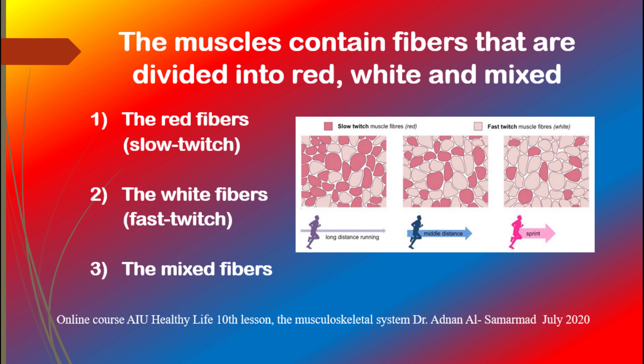The white fibers are suitable for athletes who should perform short and strong performances. The mixed fibers, also called fast twitch A, occur in 80% of people and have a mixture of endurance and strength activities, and are suitable for medium distance races or medium strength for longer periods.